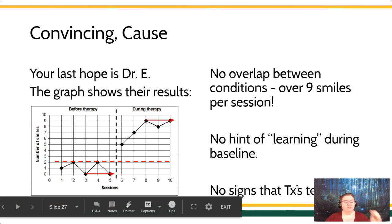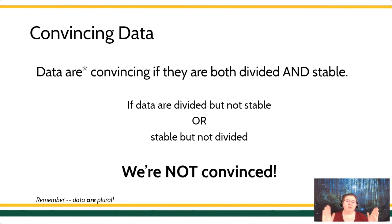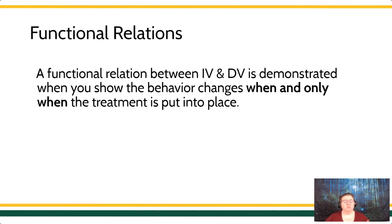When we're talking about convincing data, what we mean is we have data that are both divided and stable. Remember, data are plural — data are convincing if they're both divided and stable. If your data are divided but not stable, or stable but not divided, your data are not convincing. You have to have both division and stability to say they're convincing data. But that's not enough — convincing data is a good start, and you can demonstrate convincing data in a comparison design.